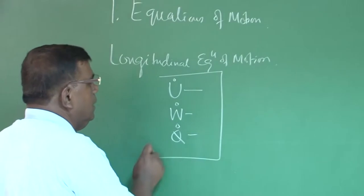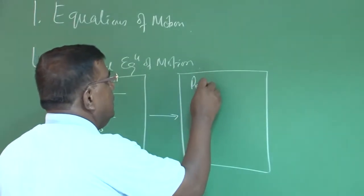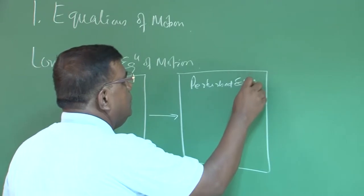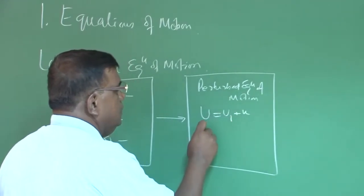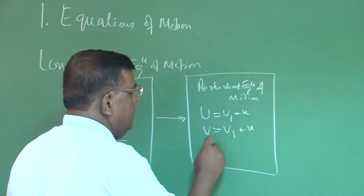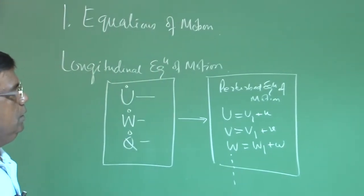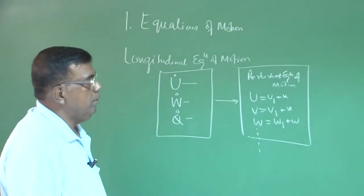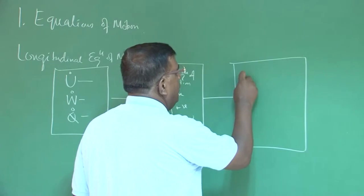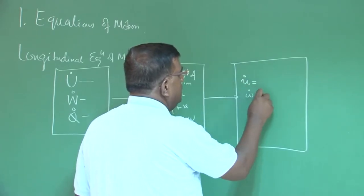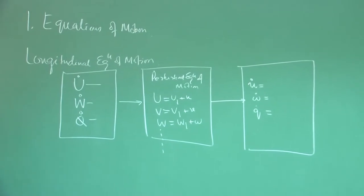From there, we went into development of the perturbed equation of motion using small perturbation strategy. We changed u to u1 plus small u, w to w1 plus small w, and so on — with the understanding that u, v, w in small letters are all perturbed quantities. From there, we developed perturbed equations of motion typically in the form u dot, w dot, and q dot equal to the forces: aerodynamic forces, propulsive forces, and gravity.